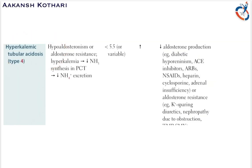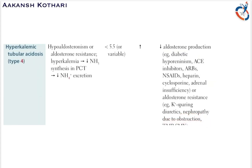Type 4 RTA is related to aldosterone, so please check the module on the adrenal gland for more on aldosterone formation and related defects. There are two main mechanisms: first, decreased aldosterone production due to adrenal insufficiency; and second, aldosterone resistance, which can result from prolonged use of potassium-sparing diuretics or nephropathy caused by obstruction.